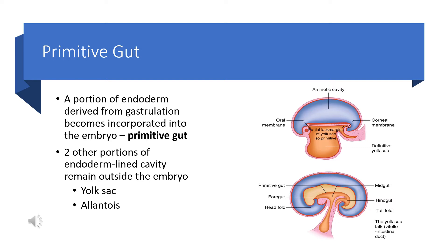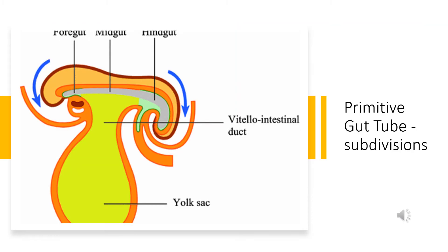Two other parts of this endoderm-lined cavity — namely the yolk sac and allantois — lie outside the embryo. We have seen the formation of the primitive gut and now we will try to understand the subdivisions of the primitive gut.